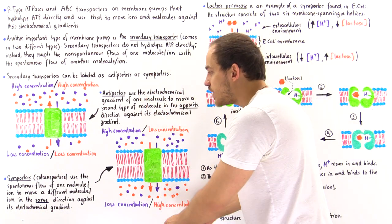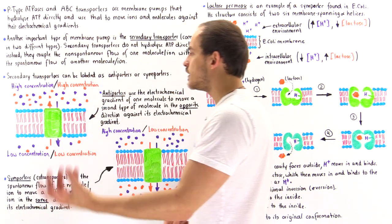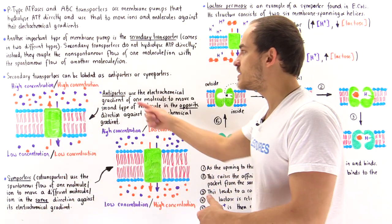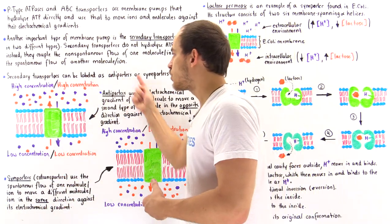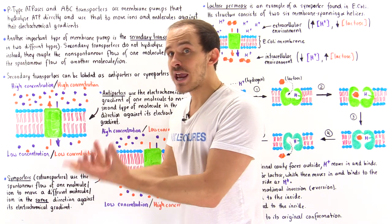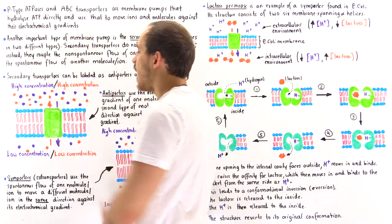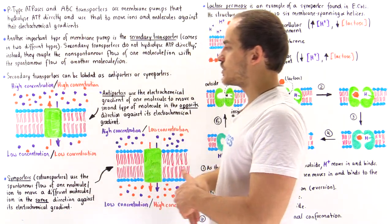That's why we call them co-transporters or symporters — they move in the same direction. In contrast, antiporters or exchangers move molecules in opposite directions.